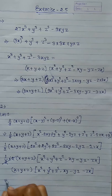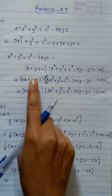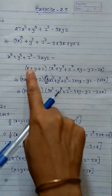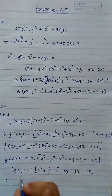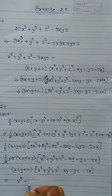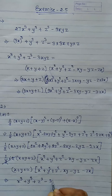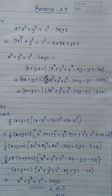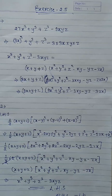This result equals x plus y plus z into x square plus y square plus z square minus xy minus yz minus zx, which equals x cube plus y cube plus z cube minus 3xyz. So right hand side equals left hand side. Hence proved.